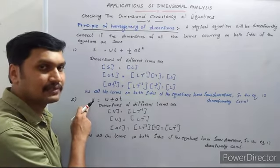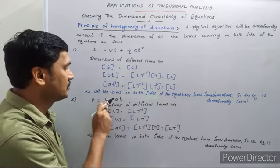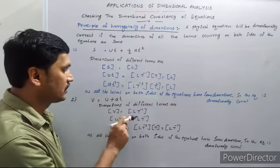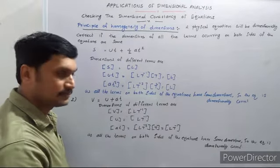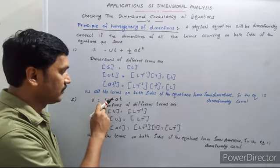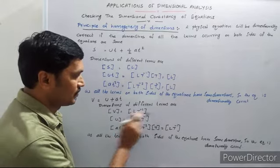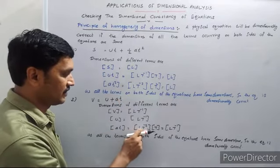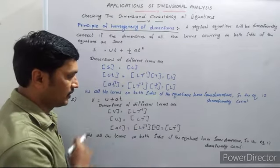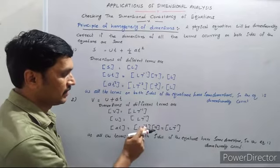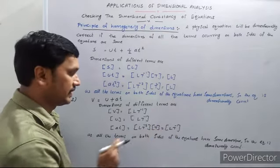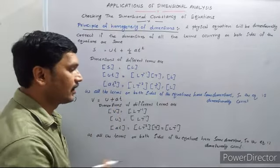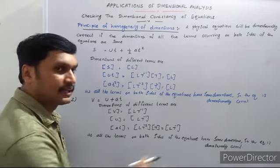On the left-hand side we have a single term v, the final velocity, with dimension L·T⁻¹. On the right-hand side there are two terms: u, the initial velocity, with dimension L·T⁻¹; and a into t, where acceleration a has dimension L·T⁻² and t has dimension T, giving L·T⁻¹. All terms on both sides have the same dimension, so this equation is also dimensionally correct.